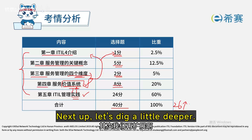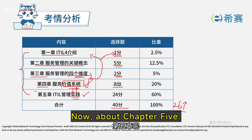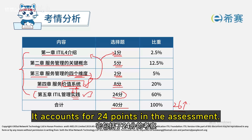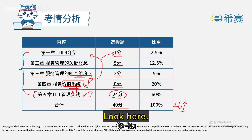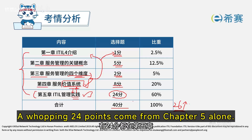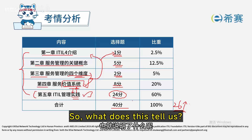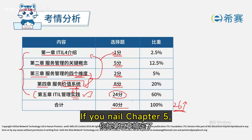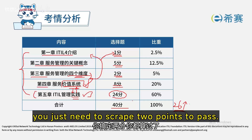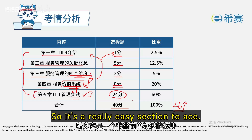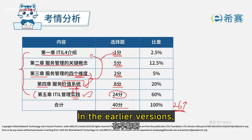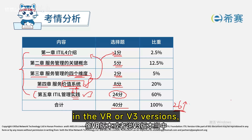After that comes practice — and out of all the chapters, chapter five is by far the most critical. It's worth a whopping 24 points on the test. The test is out of 40 points and you need 26 to pass, so a full 24 points come from chapter five alone. Nail chapter five and you're golden — scoring just two points from the other concepts is enough to pass.